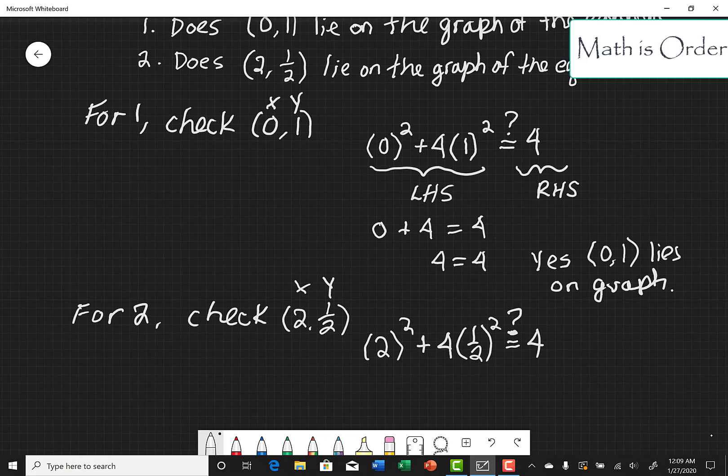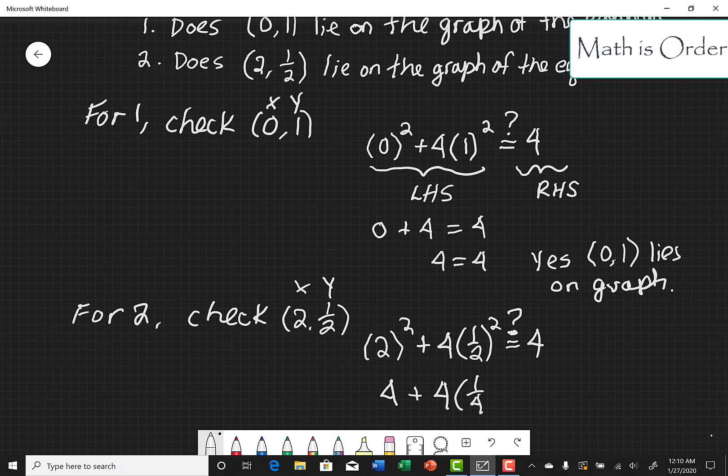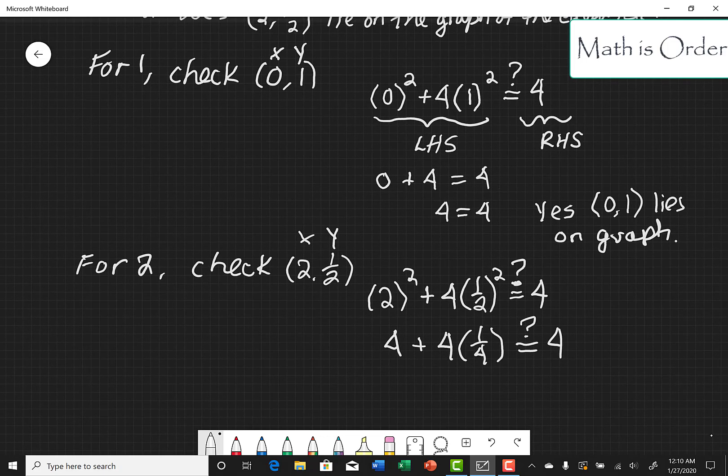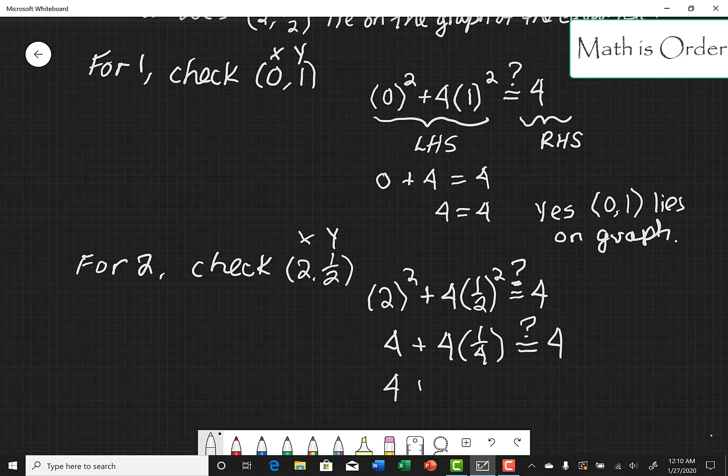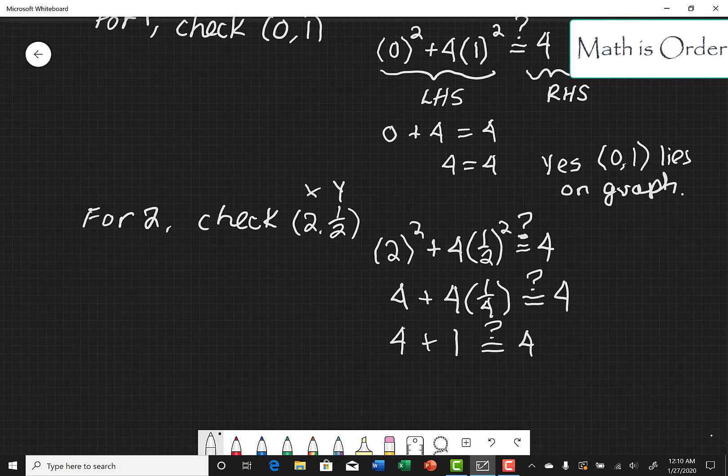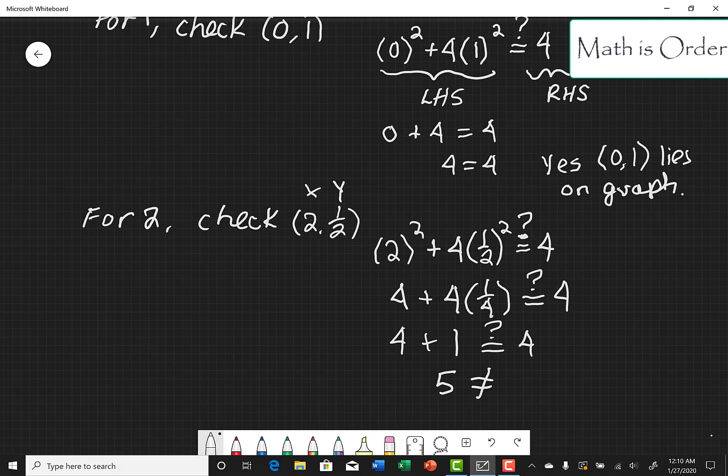So 2 squared is 4, 1/2 squared is 1/4. And when we simplify this further we can see that 4 plus 1 is 5. 5 is not equal to 4.